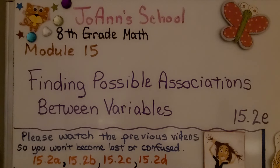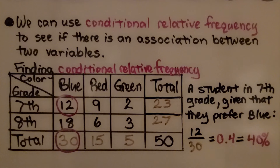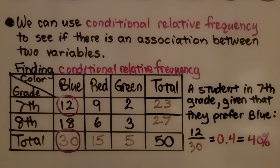We're going to keep talking about conditional relative frequency and finding possible associations between variables — lesson 15.2e. We can use conditional relative frequency to see if there's an association between two variables.